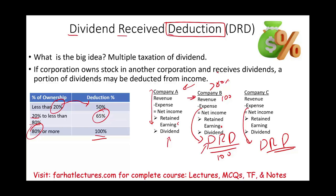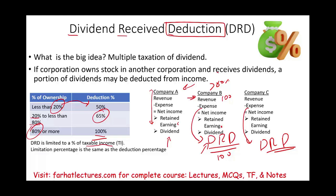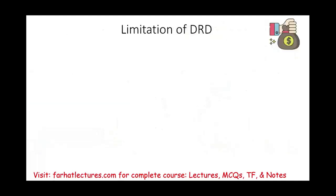So that's the big idea. Now, the dividend-received deduction is limited to a percentage of taxable income — there's always a limitation. And that percentage is the same as the deduction percentage, meaning the same as the ownership deduction percentage. So what is the limitation of the DRD? Let's talk a little bit more about the limitation.